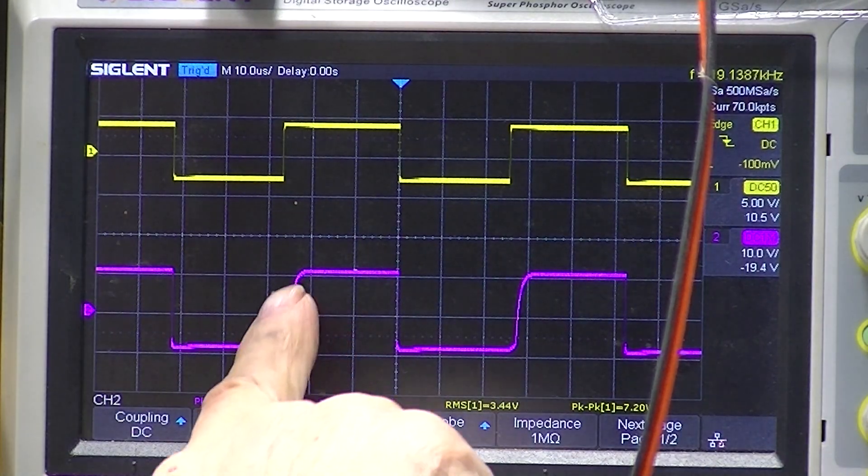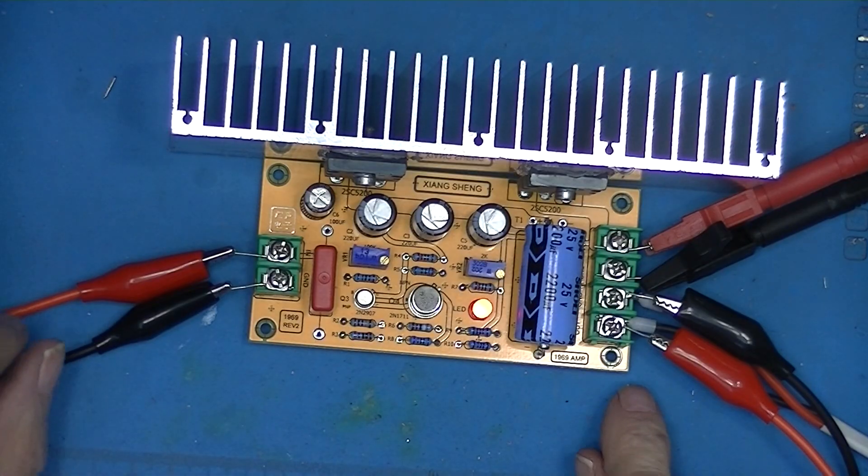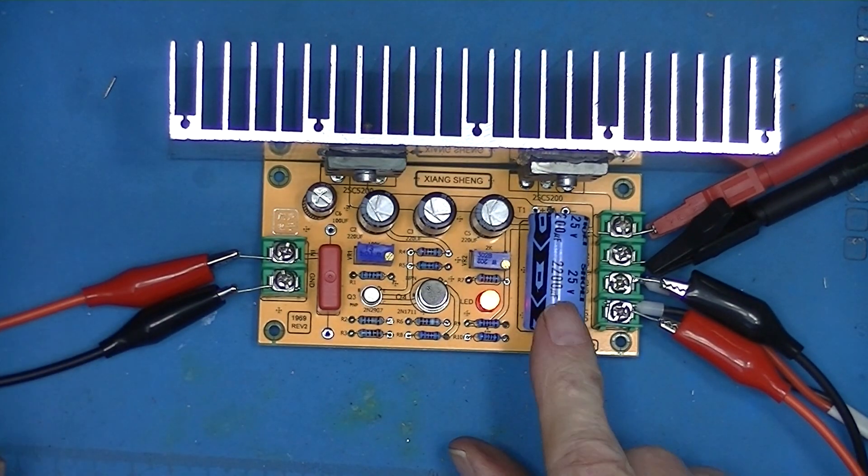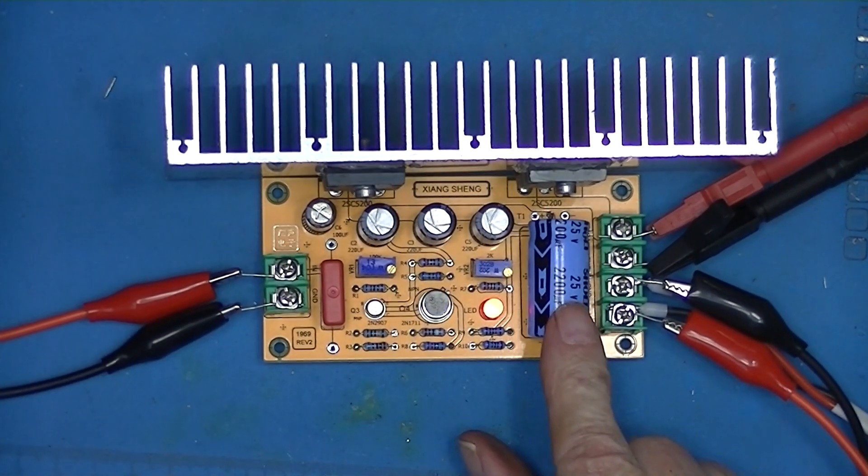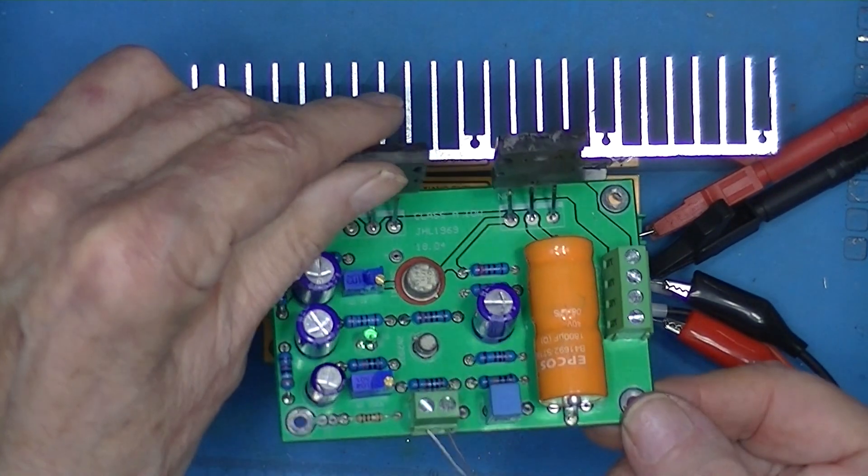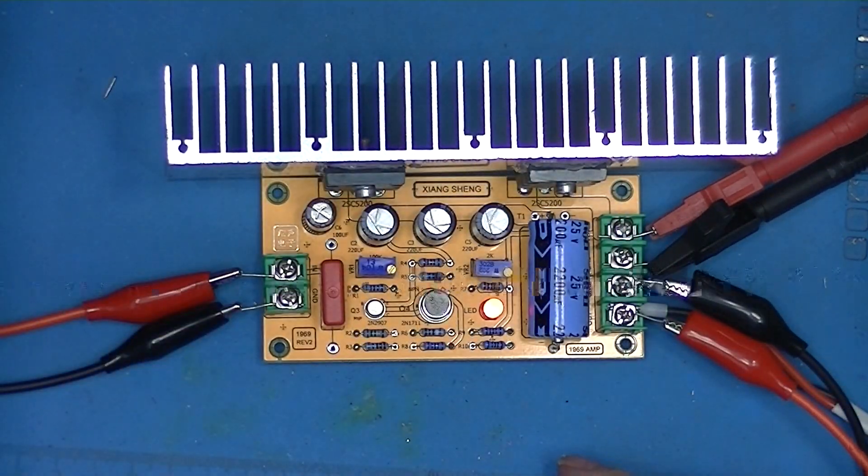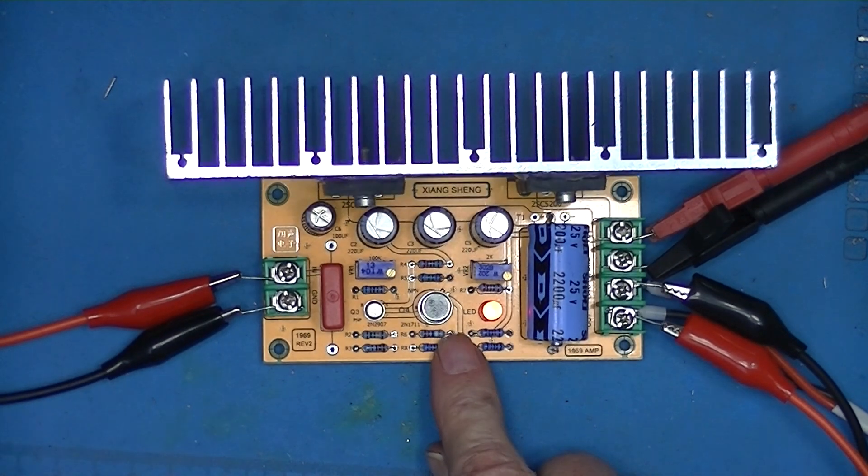At 20 kilohertz we're beginning to see a little bit of rounding. So this little amplifier doesn't quite make it. Actually I think, looking at all of them, amplifier number six is a little bit better.